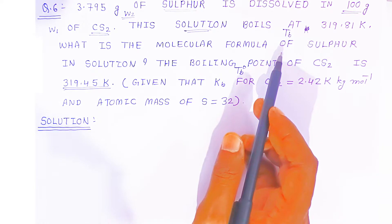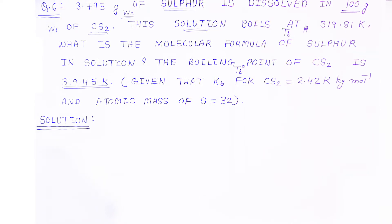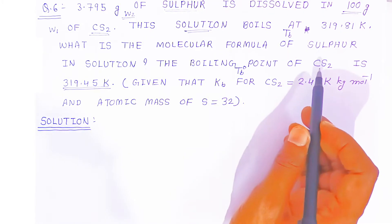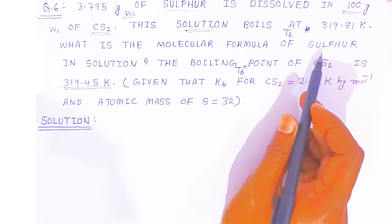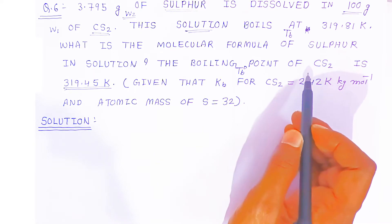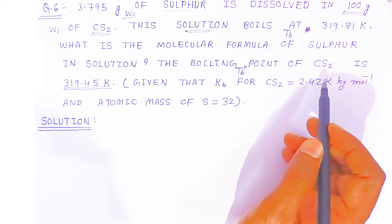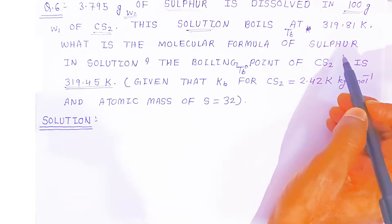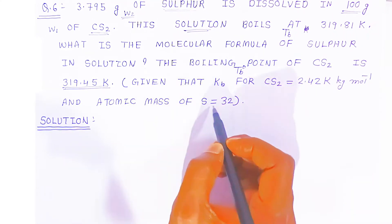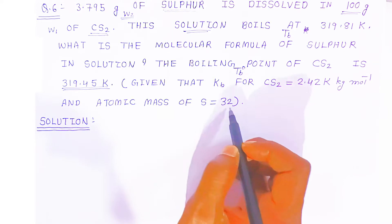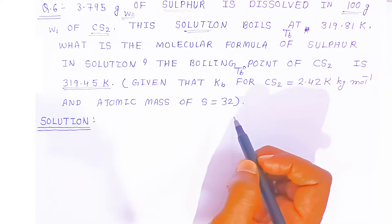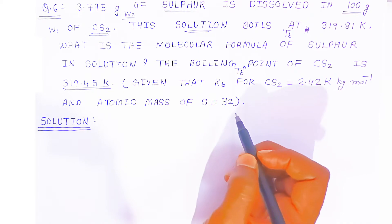To find the molecular formula of sulfur, we first need to calculate the molar mass of sulfur. Once we know the molar mass, we divide it by the atomic mass of sulfur to get the number of atoms in the molecule, which gives us the molecular formula.